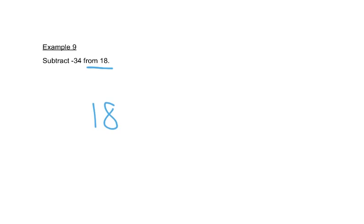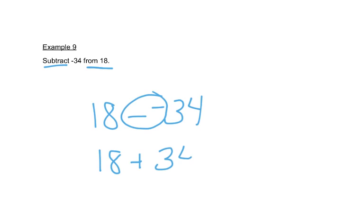Let's look at this problem: subtract negative thirty-four from eighteen. Remember, 'from' means you have to have something there first, so the eighteen comes first, and then we subtract negative thirty-four. Two negatives together — we add the opposite — so we end up with eighteen plus thirty-four, which you can do in your calculator, and we get fifty-two.